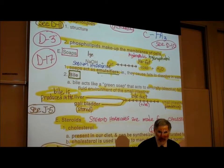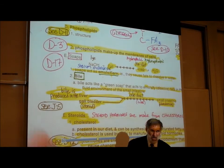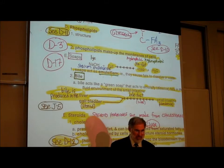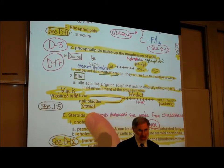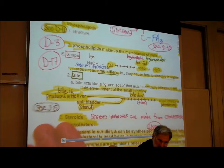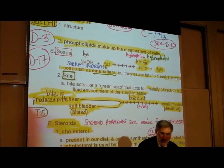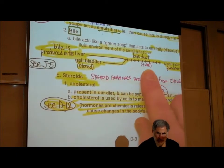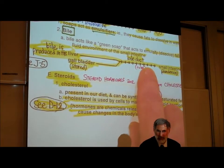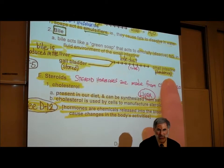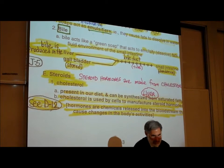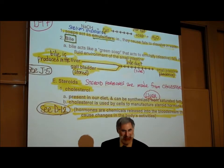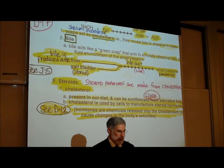Where does bile come from? Bile is produced in our liver, then stored in our gallbladder, and then carried through a tube called a bile duct to our small intestine — specifically the duodenum — and that allows the fats in our intestine to dissolve in water.